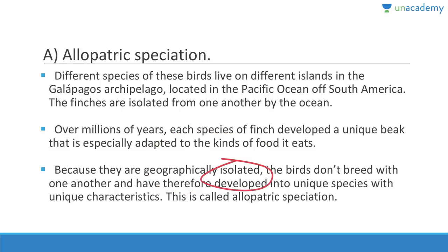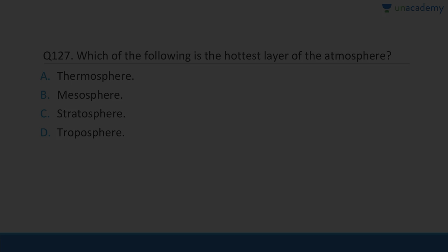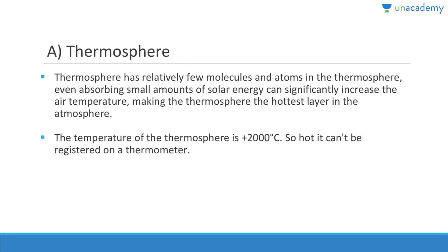Question 127: The hottest layer of the atmosphere is the thermosphere, where temperatures can exceed 2000 degrees Celsius. However, you cannot feel this heat because there are very few molecules to conduct it. Thermosphere molecules absorb small amounts of solar energy, significantly increasing temperature but with no hot sensation felt by humans.